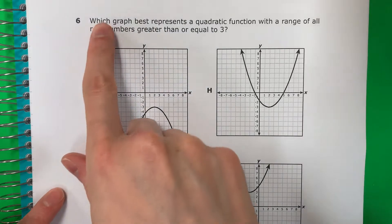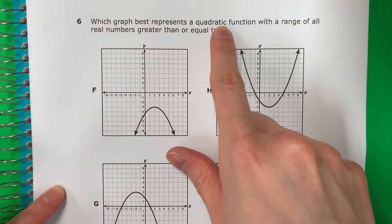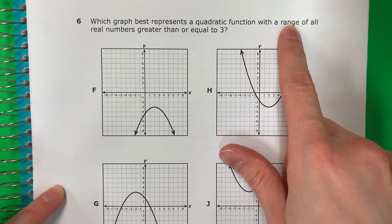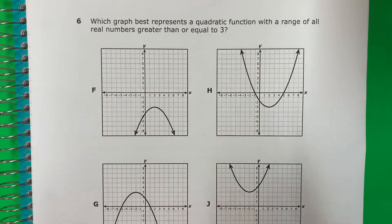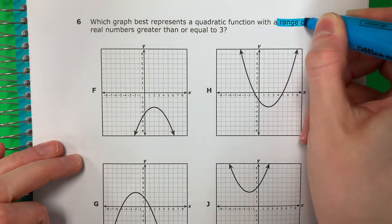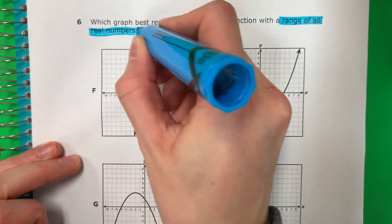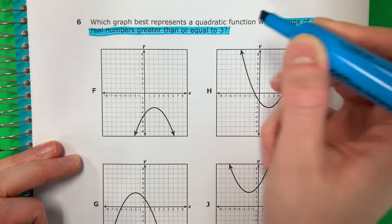Question 6. Which graph best represents a quadratic function with a range of all real numbers greater than or equal to 3? So range of all real numbers greater than or equal to 3.